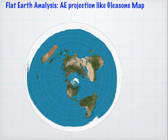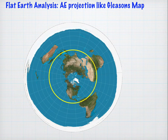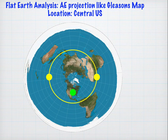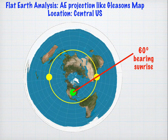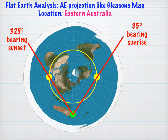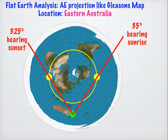Here's a projection very similar to the Gleason map — an AE projection. We draw the path of the sun, draw two points representing sunrise and sunset, and our third point is in the central United States. Plotting the bearing gives us 60 degrees for sunrise and 300 degrees for sunset. Repeating the process for eastern Australia, the angles are more dramatic: 35-degree bearing and 325-degree bearing for sunrise and sunset. This will be true for just about any area in the southern hemisphere.